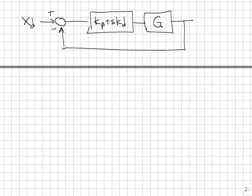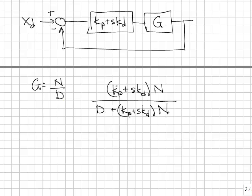We can write the closed loop system by doing the block algebra. I'm going to let g of s be the ratio of two polynomials, n of s and d of s. And then block diagram algebra, I'm left with this. My new system has the numerator n times kp plus skd and the denominator d plus kp plus skd times n.